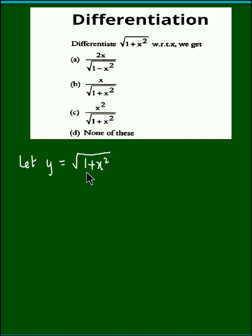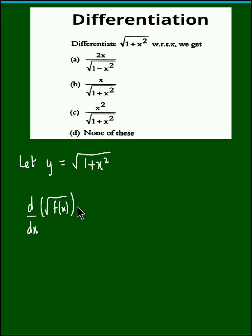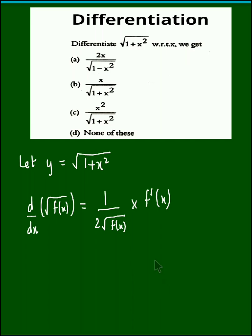Now, the given function is of the form root of f(x). We know that the derivative of root f(x) is 1 upon 2 root f(x) into the derivative of f(x), that is f prime x. So using the chain rule we can easily obtain dy by dx for the given function.